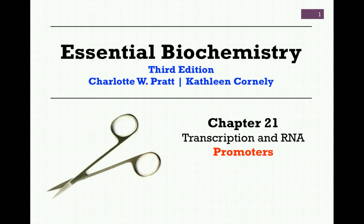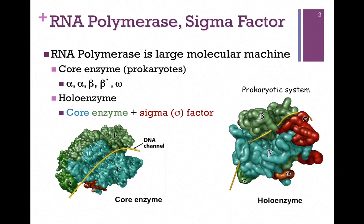In our next lesson on transcription and RNA from Chapter 21, we want to consider both prokaryotic and eukaryotic transcription promoters. We want to first examine bacterial promoters as that is a simpler system. In order to do so, let's look at RNA polymerase in a prokaryotic system.